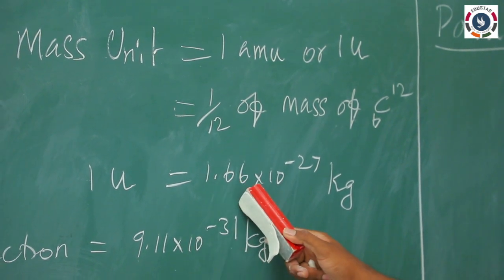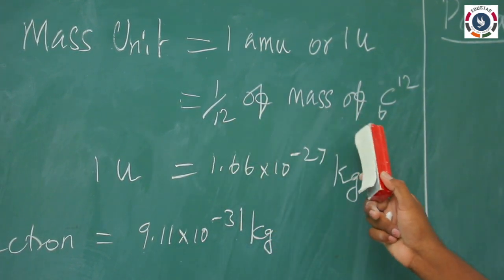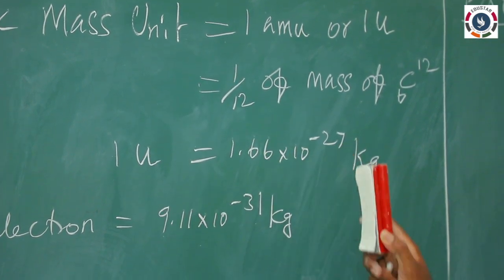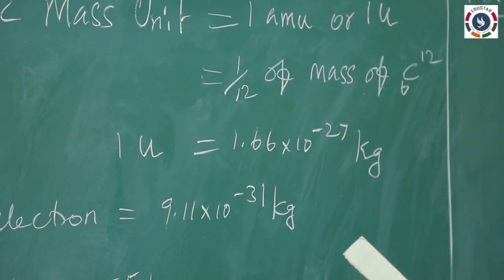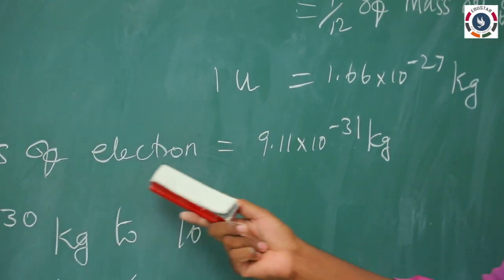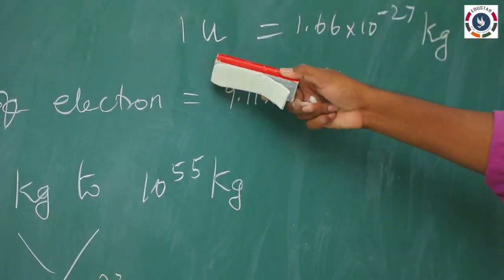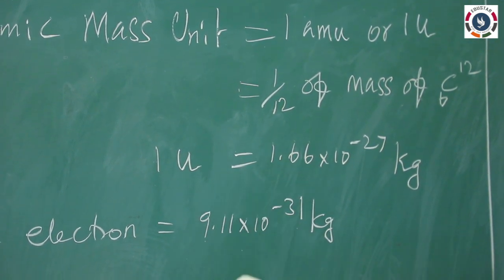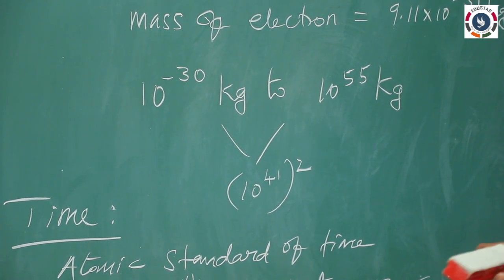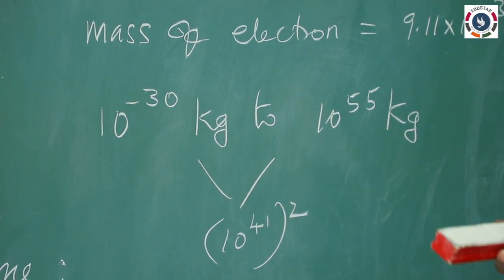The value of 1 u is 1.66×10⁻²⁷ kilogram. It is called atomic mass unit. Every atomic-scale particle is measured in terms of atomic mass unit. Similarly, we can represent the mass of protons, neutrons, and electrons in atomic mass unit. However, the actual mass of an electron is 9.11×10⁻³¹ kilogram in SI units. We should convert practical units to SI units, especially when more than one physical quantity is involved.